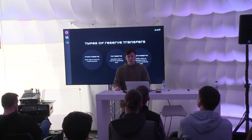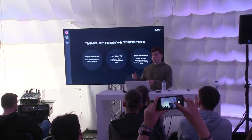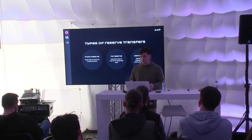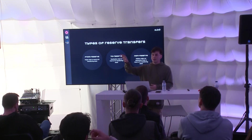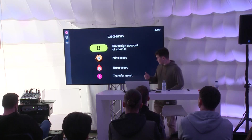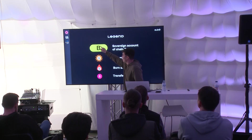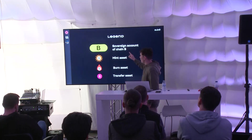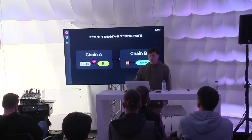There are three kinds of reserve transfers based on which chain is the reserve. If the origin chain is reserve, it's called a from-reserve transfer. If the destination chain is reserve, it's a to-reserve transfer. If neither origin nor destination is reserve, it's a non-reserve transfer involving a third-party reserve chain. Let's now review diagrams. For a from-reserve transfer, chain A is the reserve and chain B is the destination.